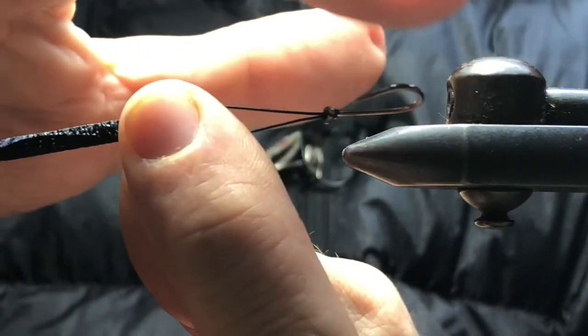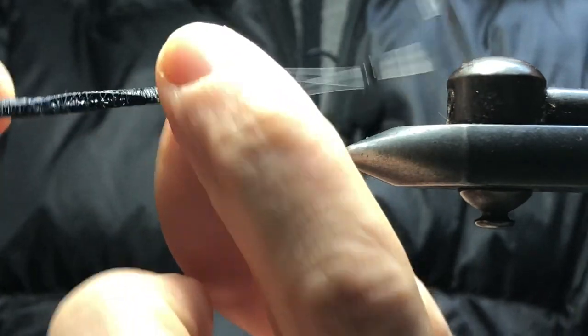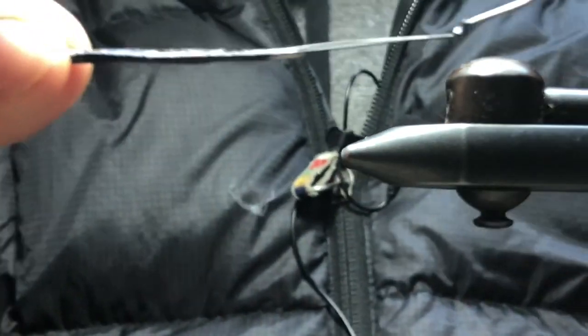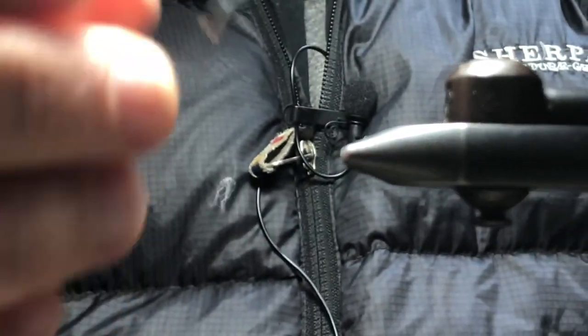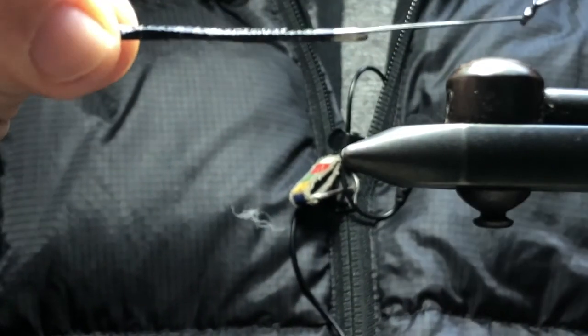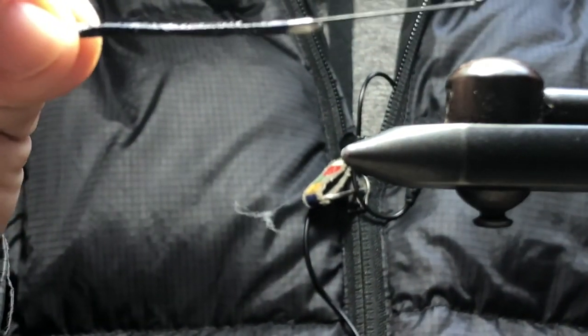So that's basically it. That's how you tie a stinger hook on, getting ready to tie your intruder fly or whatever you want to go for.